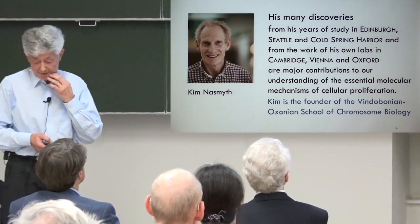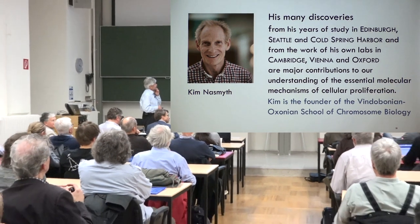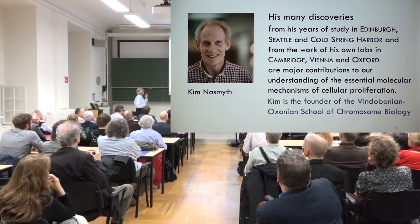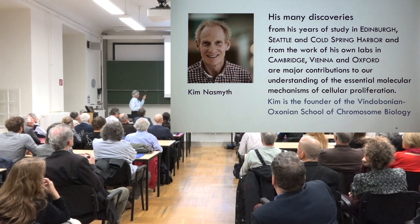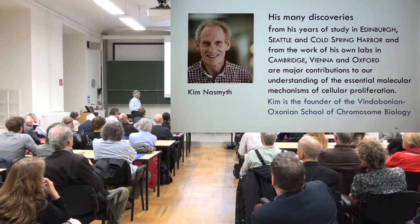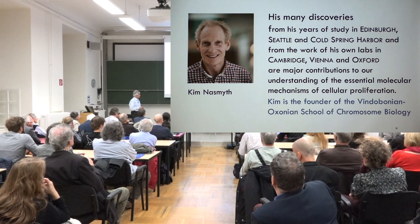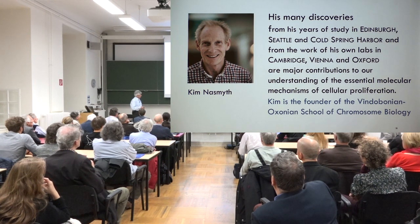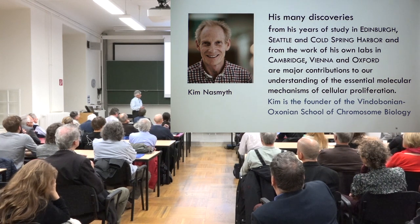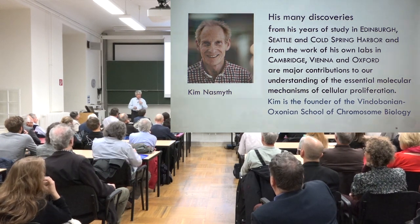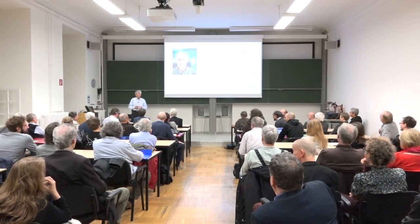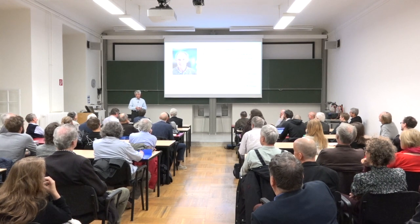This is Kim. His many discoveries from years of study in Edinburgh, Seattle, Cold Spring Harbor — as postdoc and later group leader in Cambridge — and as director in Vienna and Oxford, are major contributions to our understanding of the essential molecular mechanisms of cellular proliferation. Kim is the founder of what I call the Vienna–Cambridge–Oxonian School of Chromosome Biology. He has many, many important students, and Kim attracts the best.